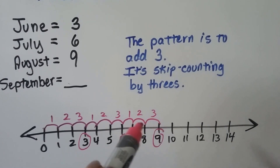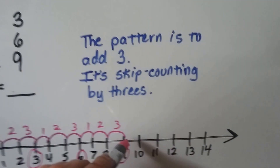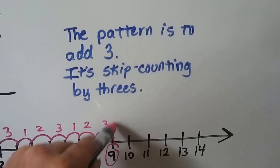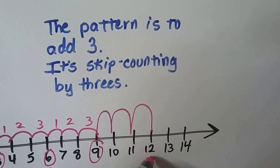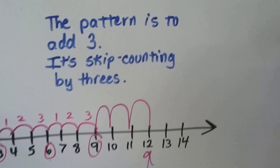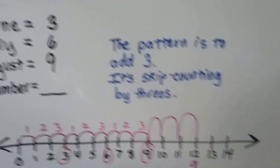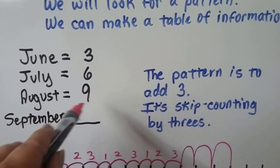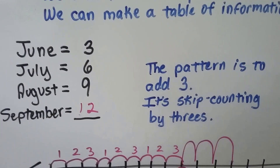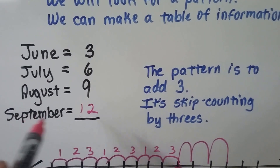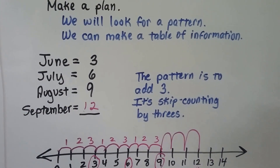It's hopping 3 times in between each number. If we hop 3 more times — 1, 2, 3 — we're going to be at 12. 3 more than 9 is 12. So she would read 12 books in September if she kept up this pattern.